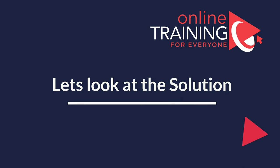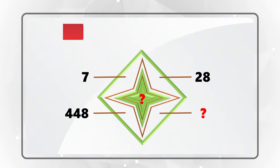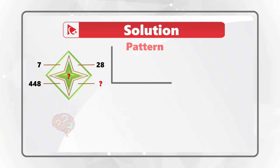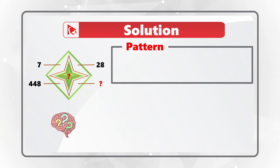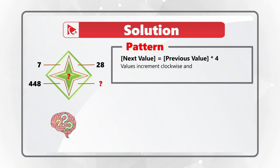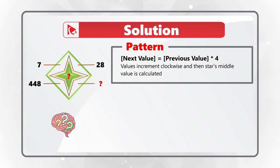If the problem seems very unusual for you, the process of solving it is very typical. You need to look for patterns. The pattern here is that the next value is calculated as the previous value multiplied by 4. Values increment clockwise starting at 11 o'clock, and the missing value in the middle of the star is calculated last.